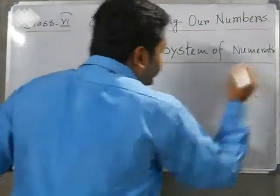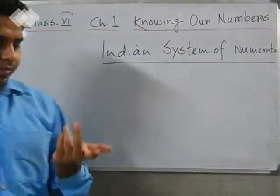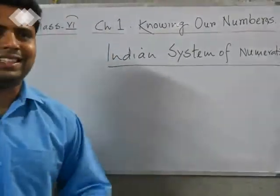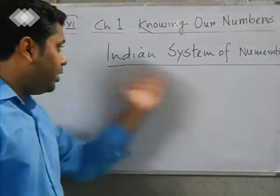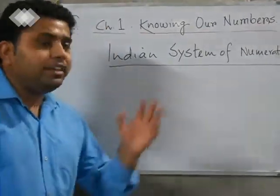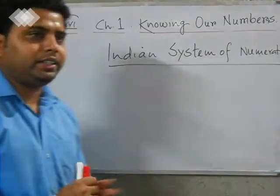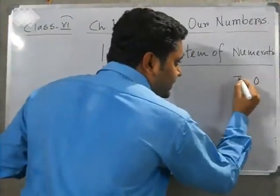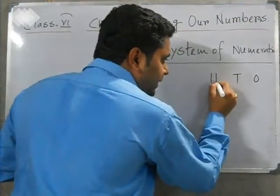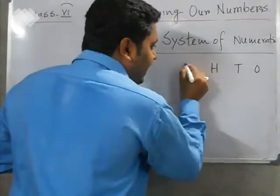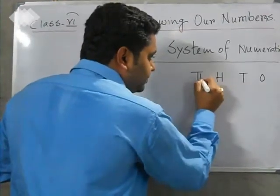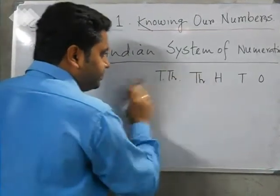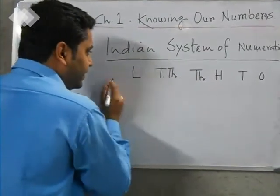Indian system of numeration — I think we learned this in previous classes, class 4 or 5, but today I will cover it in more detail. The places are: 1, 10, 100, 1,000, 10,000, lakh, and 10 lakh.